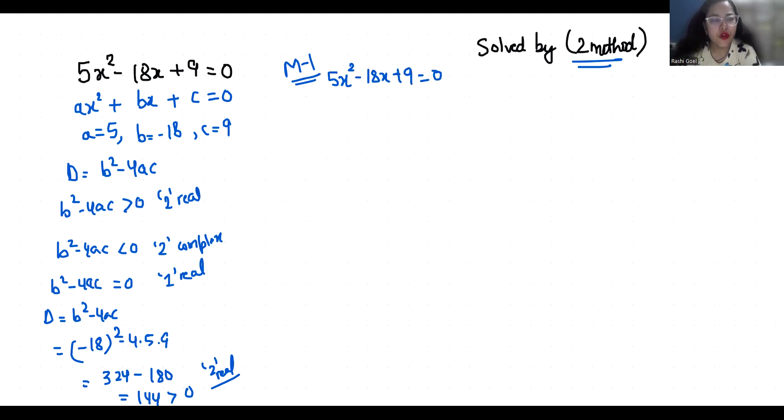So, -(-18)±√(b²-4ac) by 2 times 5. It becomes 18±√144 by 10. We can write 12 by 10. So x₁ is 18+12 by 10 and x₂ is 18-12 by 10.